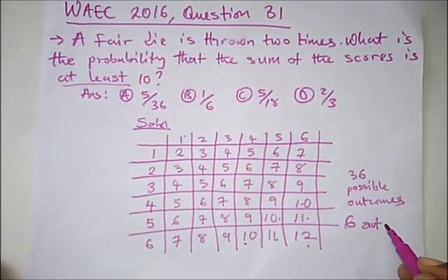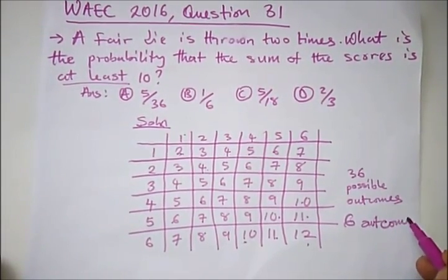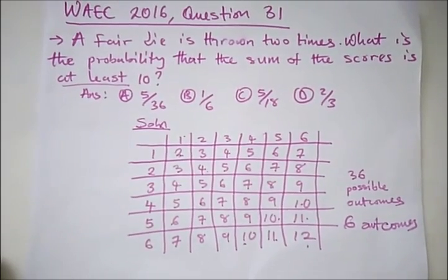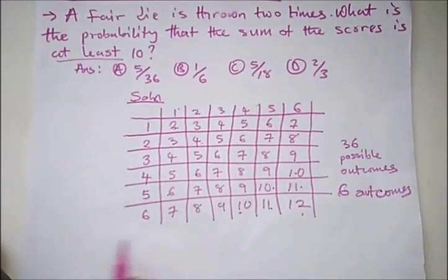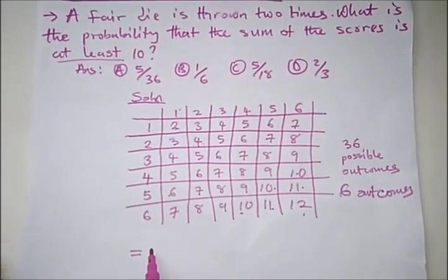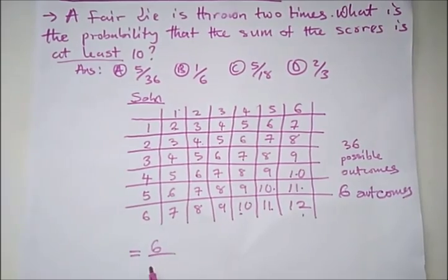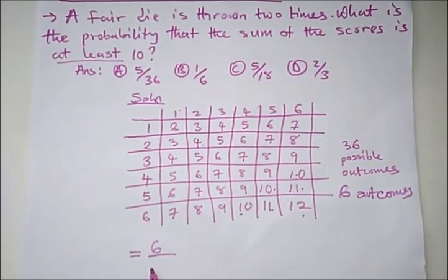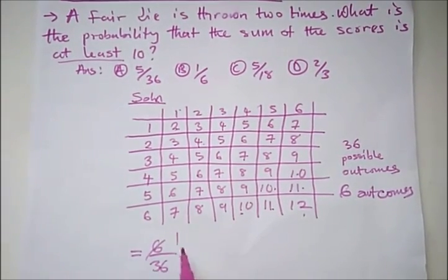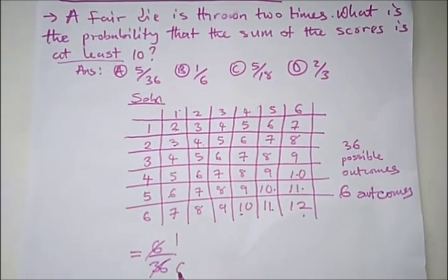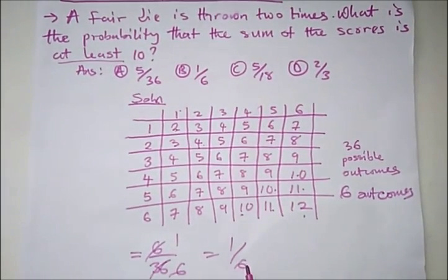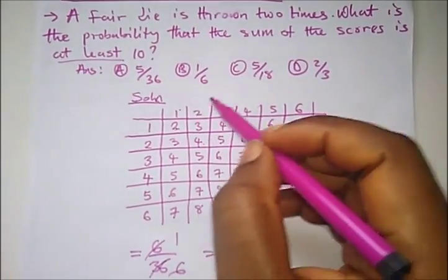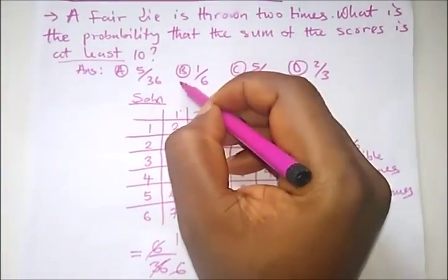And if you remember the general formula for probability, it says the outcomes divided by the possible outcomes. So we have here 6 divided by, what is our possible outcome? 36. So here, this will go 1 divided by 6. So we have 1 over 6. So our right option is option B.